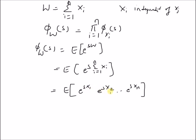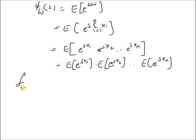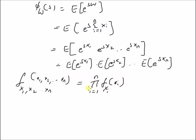Since the random variables x_1, x_2, ..., x_n are independent of each other, the expectation of the product of functions of these random variables equals the product of the individual expectations: E[e^(s·x_1)] · E[e^(s·x_2)] · ... · E[e^(s·x_n)]. This is true because the joint distribution f_{x_1,...,x_n}(x_1,...,x_n) is equal to the product from i=1 to n of f_{x_i}(x_i).